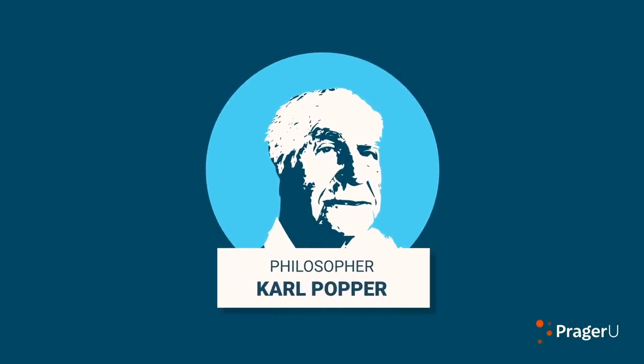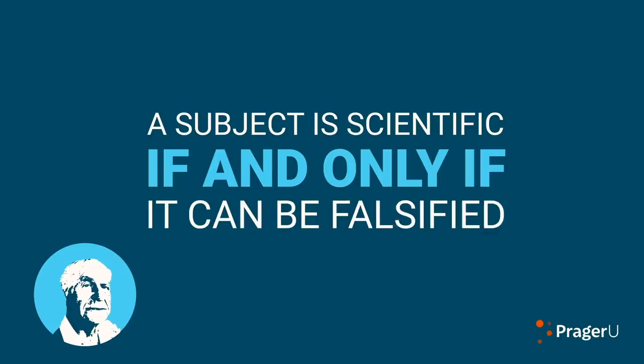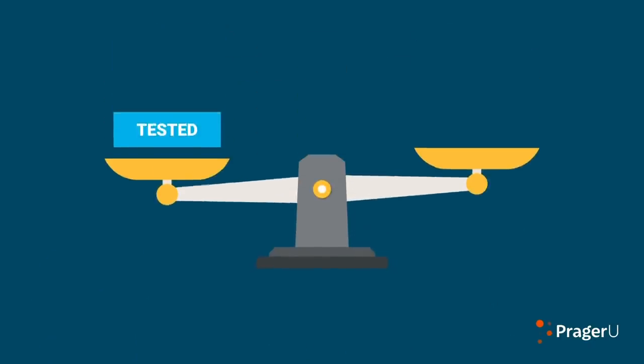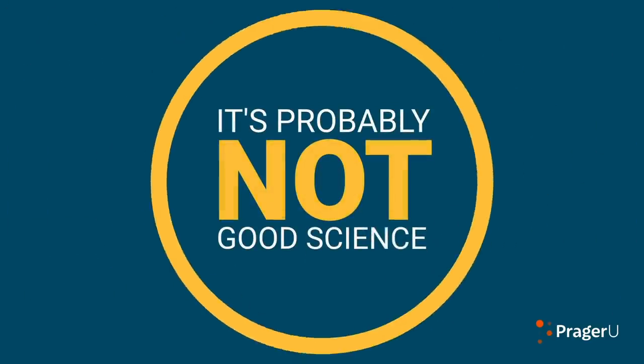The philosopher Karl Popper added one more item to this list. Popper said a subject is scientific if and only if it can be falsified. In other words, if your theory can't be tested, if it can't be proven wrong, it's probably not good science.